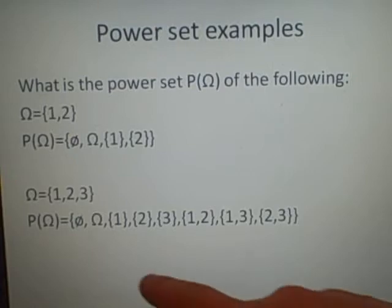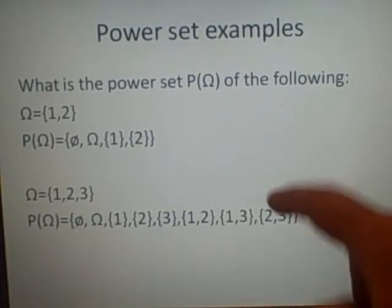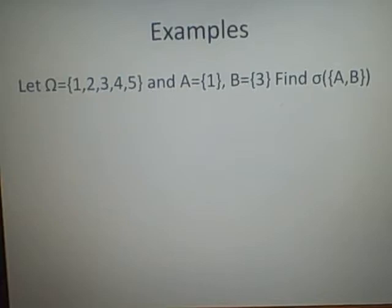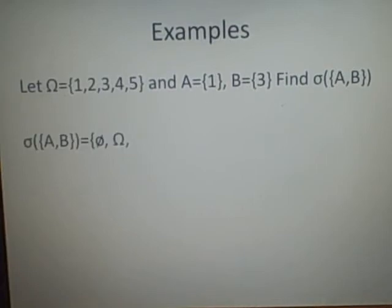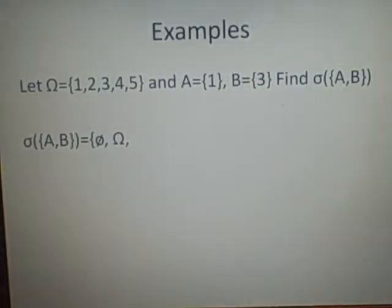Right, this is our last example. Let Ω = {1, 2, 3, 4, 5} and A = {1} and B = {3}. Then find the σ-field generated by the sets A and B. Here, that's what that means, or the σ-algebra generated by the sets A and B. Right, now first we have to have, as usual, the empty set and Ω.